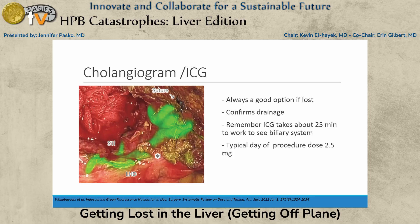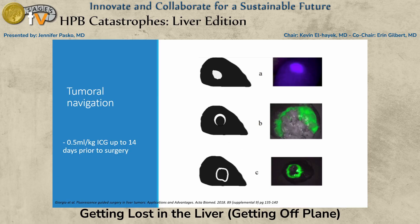Cholangiogram can be very helpful, as can ICG — especially with Firefly on the robot. If using it day-of, give it prior to the procedure. Our colleagues in Asia have really been utilizing ICG for liver function by giving it about 14 days prior to surgery, and now they're using it to identify tumors. Well-differentiated HCC retains ICG and appears bright, moderately differentiated is intermediate, and cholangiocarcinoma or colorectal liver mets appear differently. In a steatotic liver where ultrasound is limited, this can be very helpful.